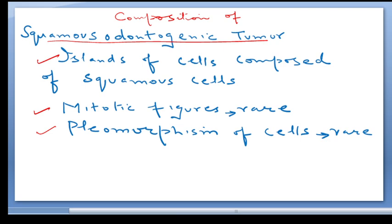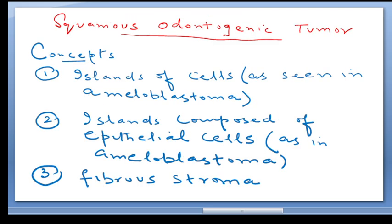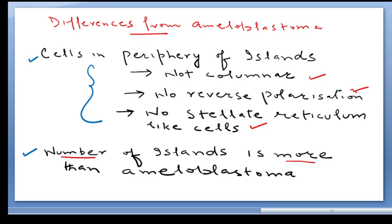To summarize, the squamous odontogenic tumor is composed of islands of squamous cells. Mitotic figures are rare and pleomorphism of cells is occasionally seen. There is a well-defined fibrous stroma, and we have to differentiate it from acanthomatous ameloblastoma. On the basis of number of islands, we can differentiate this tumor from ameloblastoma — in squamous odontogenic tumor, the number of islands is more but these are smaller in size.